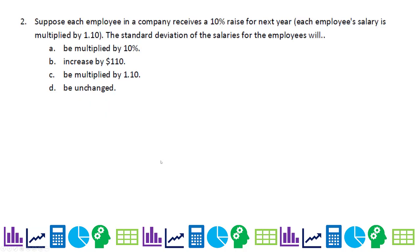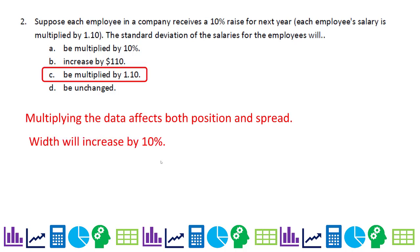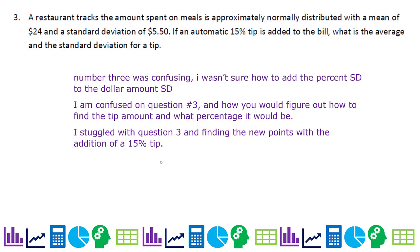Next one: suppose each employee in a company receives a 10% raise for the next year — each employee's salary is multiplied by 1.10. The standard deviation of the salaries will increase. Multiplying every data point by a constant affects both position and spread, so the width will increase by 10%. We multiply by 1.10 to get the new width — not by 10%, which would actually make it smaller.